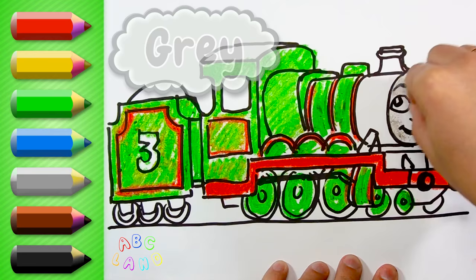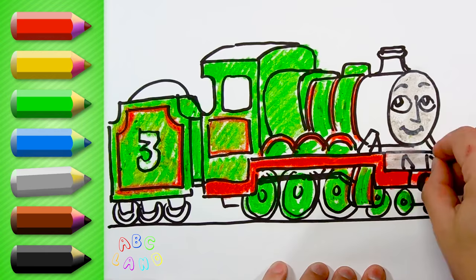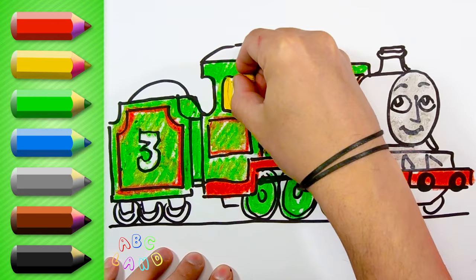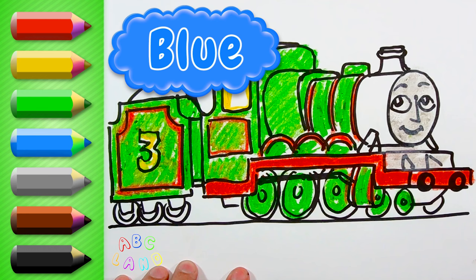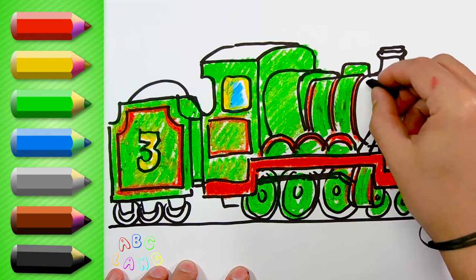Next I will take grey. It will go for Henry's face and below it. After grey, I'm taking yellow color for the window and number 3. Blue color goes next. It will go just for the center of the window, and that's it.